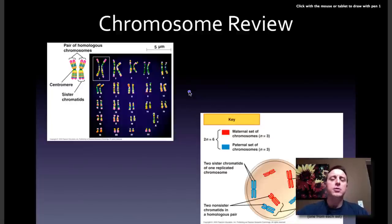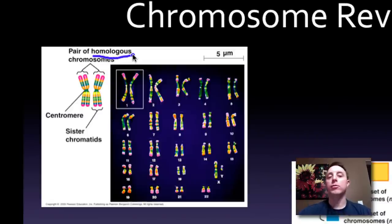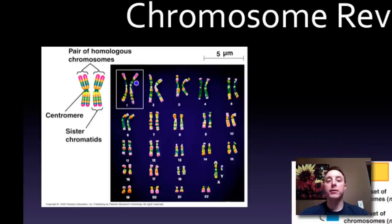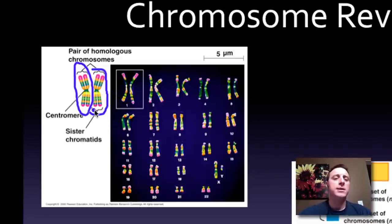Before we get into talking about meiosis, I want to refresh our memories about chromosomes and some different terms — things like homologous chromosomes and the difference between a homologous chromosome and a sister chromatid. Homologous chromosomes come in pairs. On this karyotype here — a human karyotype — you see all 23 pairs of homologous chromosomes. They come in pairs because one comes from one parent, the father, and the other comes from the other parent, mom. In this cell, the chromosomes exist in a duplicated state, so they have two arms, and we call those two arms sister chromatids.